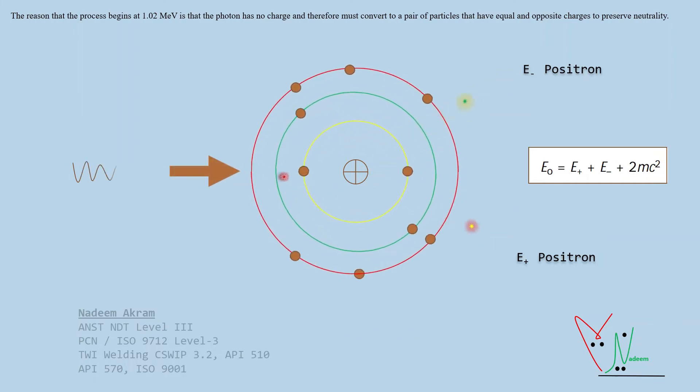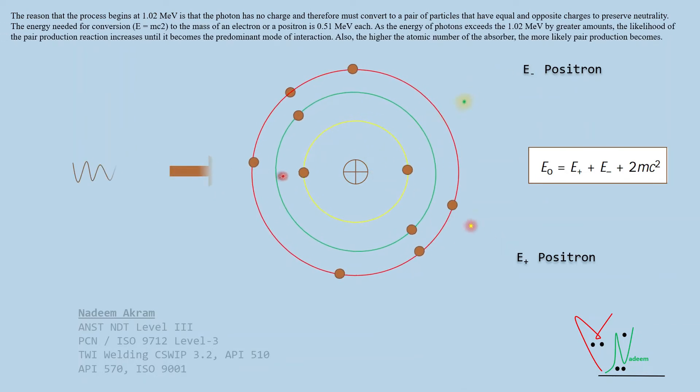The energy needed for conversion to the mass of an electron or a positron is 0.51 mega electron volts each. As the energy of photons exceeds 1.02 mega electron volts by greater amounts, the likelihood of the pair production reaction increases until it becomes the predominant mode of interaction.